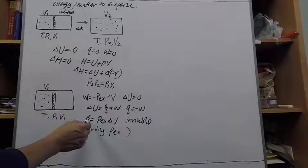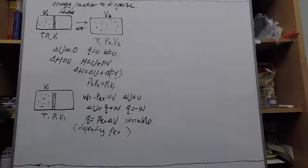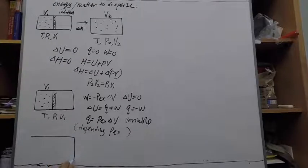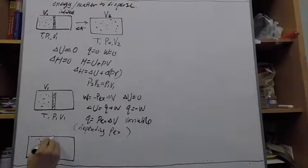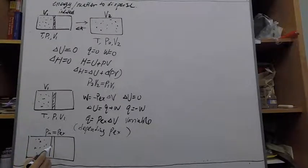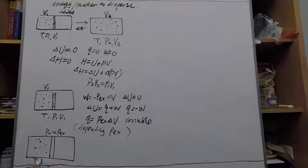This is when we refer to the earlier supplemental video where we talked about the ideal gas undergoing reversible isothermal expansion. In that case, the expansion is carried out such that at any given moment the internal pressure and the external pressure are equal. Since we keep the temperature constant, this internal pressure keeps changing as the volume increases. So we let the system undergo isothermal expansion from P₁V₁ to P₂V₂ through the isothermal expansion path.